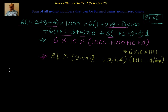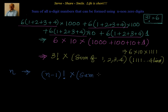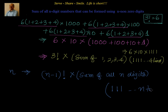Now let us put it in n format. Suppose you want to find it for n digits. If I want 4-digit numbers, the 6 is coming from 3 factorial, so that becomes (n minus 1) factorial. So the formula is: (n minus 1) factorial, multiply that with the sum of all n nonzero digits, and multiply that with 1111... written n times.